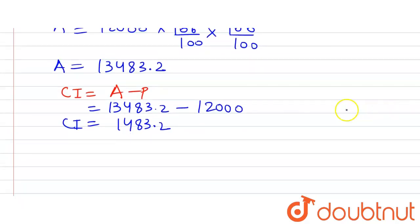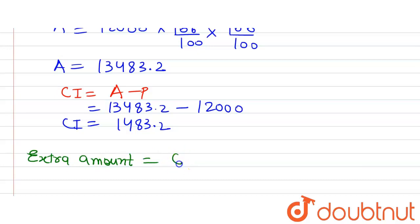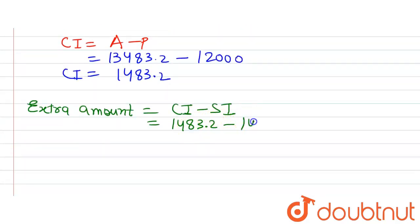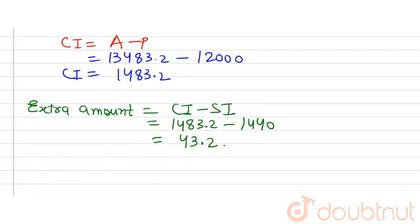We knew that compound interest would be more than simple interest. The extra amount asked in the question is: Extra Amount = CI − SI = 1,483.2 − 1,440 = 43.2. This is our answer.